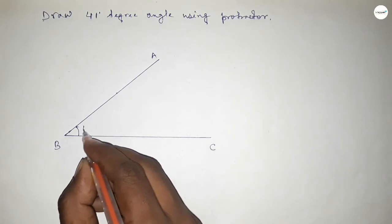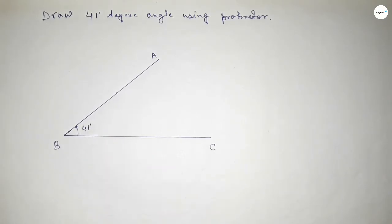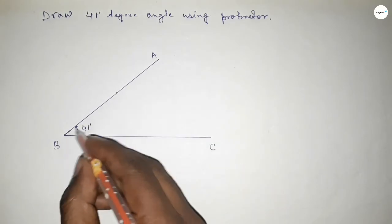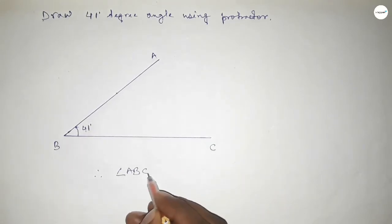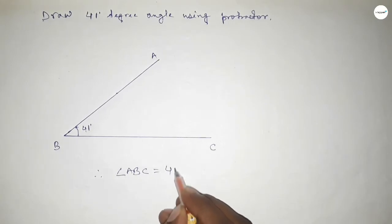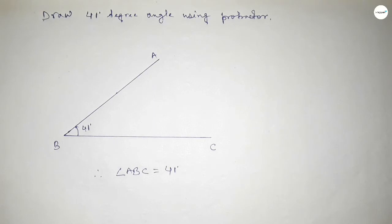So angle ABC, this is a 41-degree angle. Therefore angle ABC equals 41 degrees. That's all, thanks for watching. If this video is helpful to you, then share it with your friend.